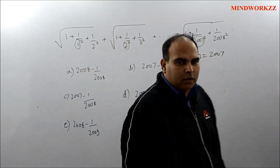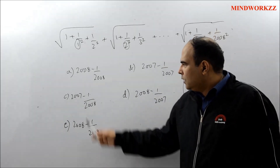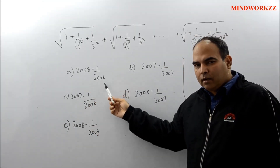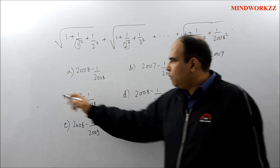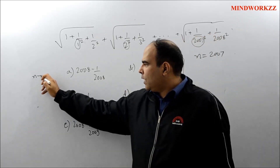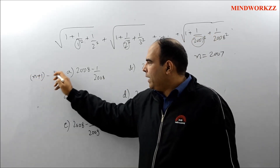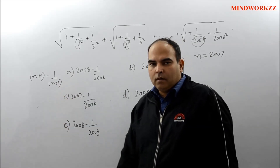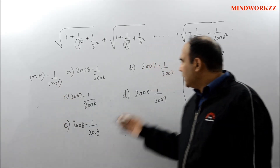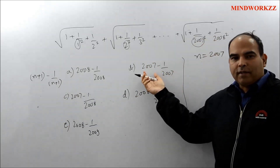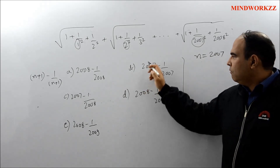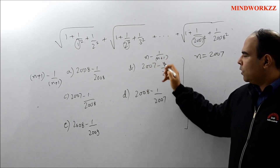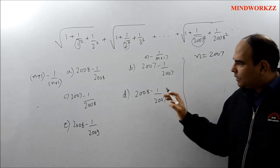Once you know n = 2007, you look at the options. The first option — 2008 minus 1/2008 — is giving us nothing but (n+1) − 1/(n+1). The second option with 2007 represents something like n − 1/(n+1), and so on, because obviously these answers have to do something with the number of terms.